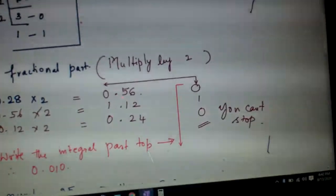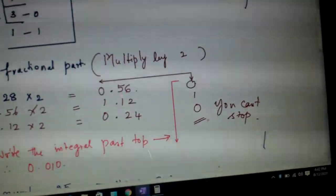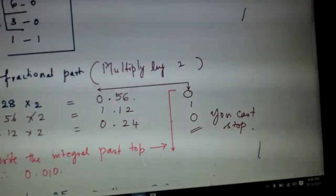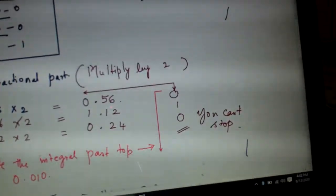Now write the integral part in this order. Here we wrote remainders in reverse order. Now we are writing it in this order, top to bottom. There we divided, here we are multiplying. That is the difference.